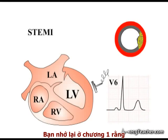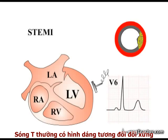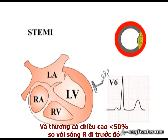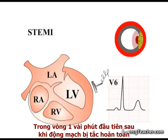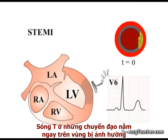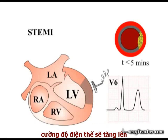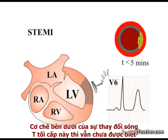You will remember from section 1 that normal T-waves tend to be slightly asymmetrical in shape and less than 50% of the height of the preceding Q-wave. Within the first few minutes of complete vessel occlusion, T-waves in the leads overlying the affected area rise in amplitude. The mechanism underlying these hyper-acute T-wave changes is unknown.